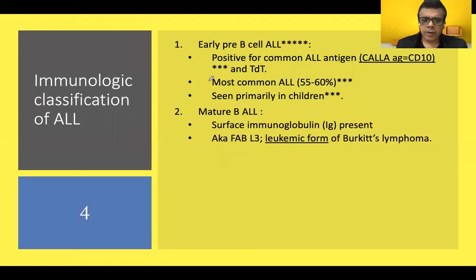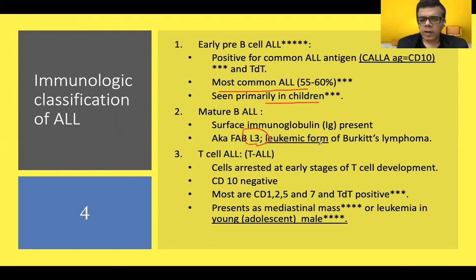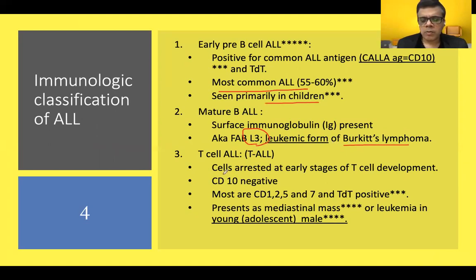Early pre-B ALL is positive for the CALLA antigen and is the most common type, seen primarily in children. Mature B cell ALL shows surface immunoglobulin positivity, and importantly, the blasts are morphologically of the L3 type — equivalent to the leukemic form of Burkitt lymphoma. L3 blasts differ from the more common L1 blasts by the presence of cytoplasmic vacuolation.